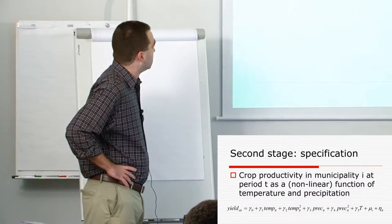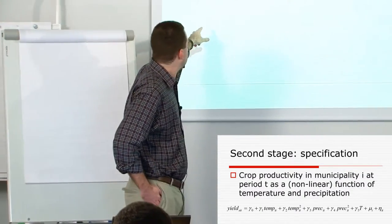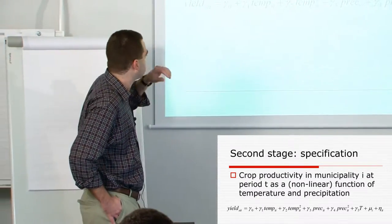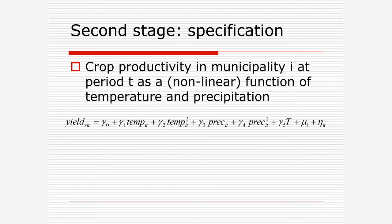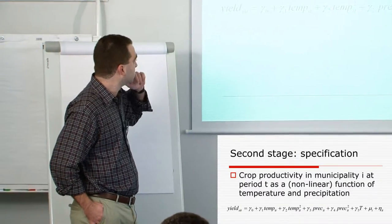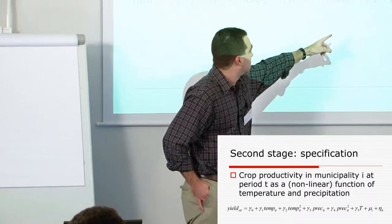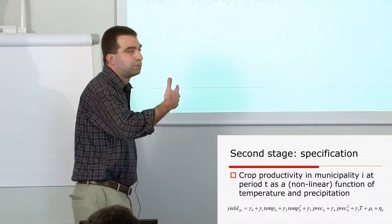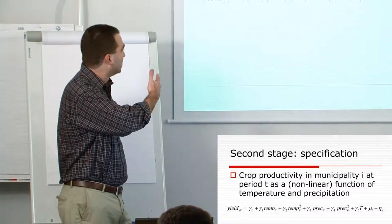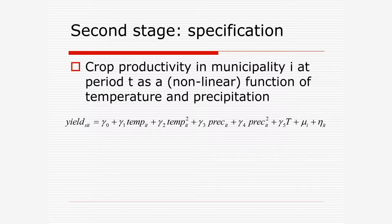The second part: we have the relationship between agricultural yields, which is production per hectare, and that depends on temperature observed in the municipality and precipitation. We introduce linear and quadratic terms to account for possible non-linearity between weather characteristics and yield, and also a time trend to account for unobserved factors, for example technological progress, since we estimate this for the period 1970 to 2002. We also introduce seasonal temperature characteristics as you'll see in the next slide.